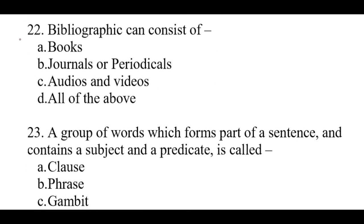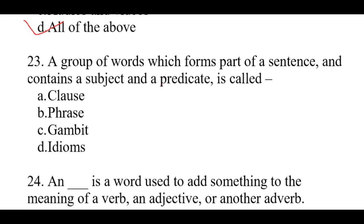Question number 22: Bibliography can consist of. The right option is D: All of the above — it consists of books, journals, periodicals, audios and videos. Question number 23: A group of words which forms part of a sentence and contains a subject and a predicate is called. The right option is A: Clause.